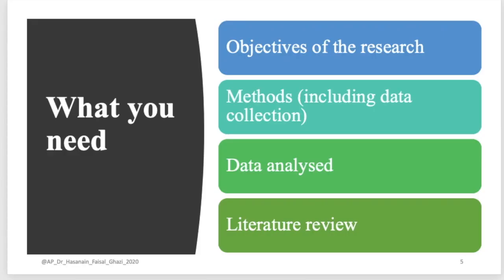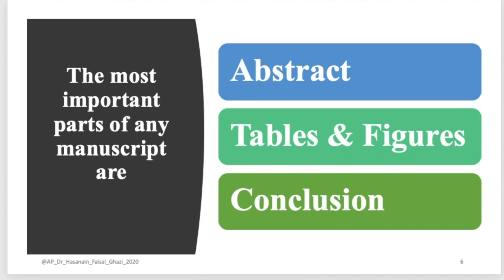If you want to write your manuscript in one week, what do you need? First, you need your objective of the research. You need the method including the data collection — how you collect the data, definition of variables, all these things. Your data should be analyzed, either by SPSS or any other statistical software. And of course, your literature review, which you can get from your research proposal. The most important parts of any manuscript are the abstract, tables and figures, and conclusion.